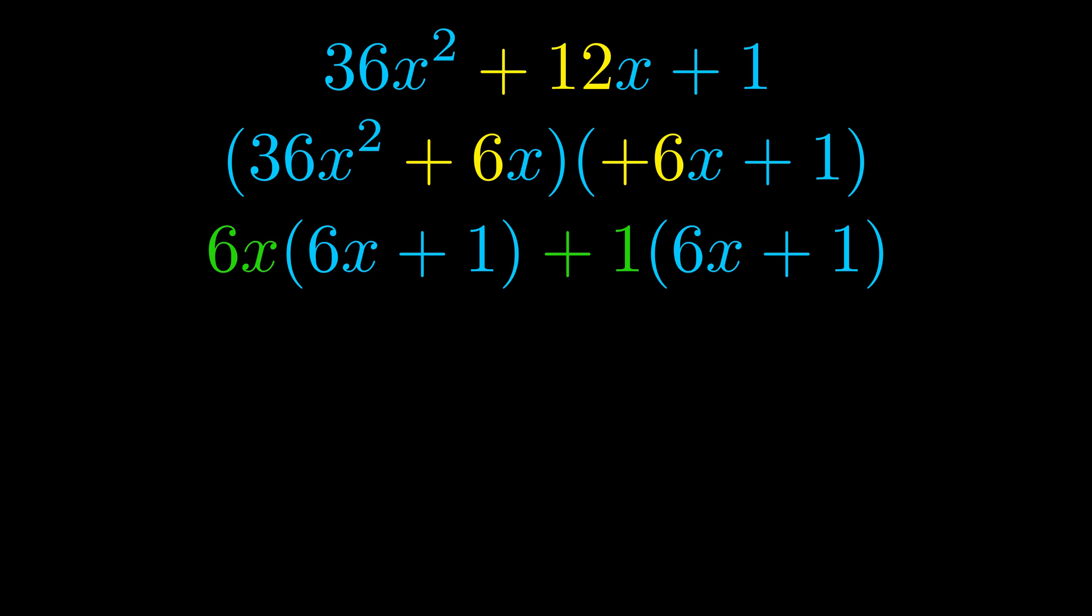Notice also how what remains inside of the parentheses is the same in both cases. The blue values are the same. Those blue values will become one of our factors and we will combine the two green values, the GCFs that we pulled out, to get the other one. And that is our fully factored equation.